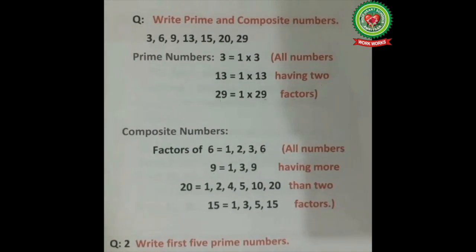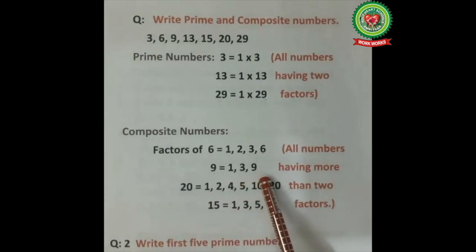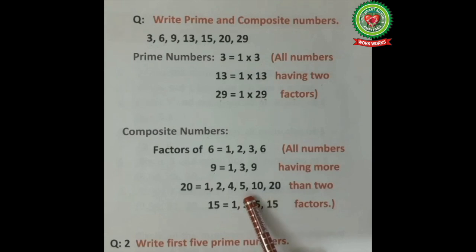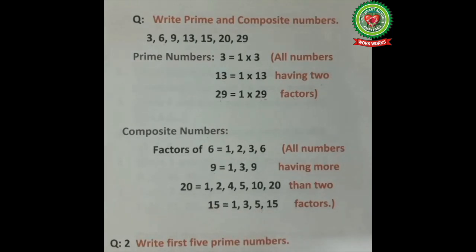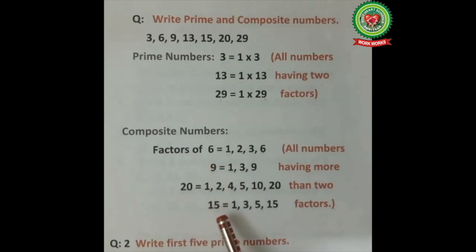Now let's find the composite numbers. Factors of 6 are 1, 2, 3, and 6. Factors of 9 are 1, 3, and 9. Factors of 20 are 1, 2, 4, 5, 10, and 20. Factors of 15 are 1, 3, 5, and 15. All these numbers have more than two factors, so 6, 9, 20, and 15 are composite numbers.